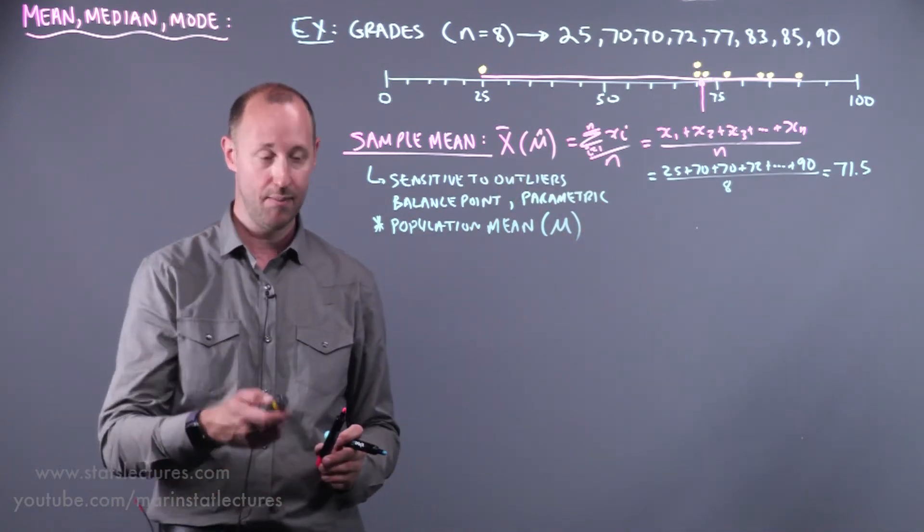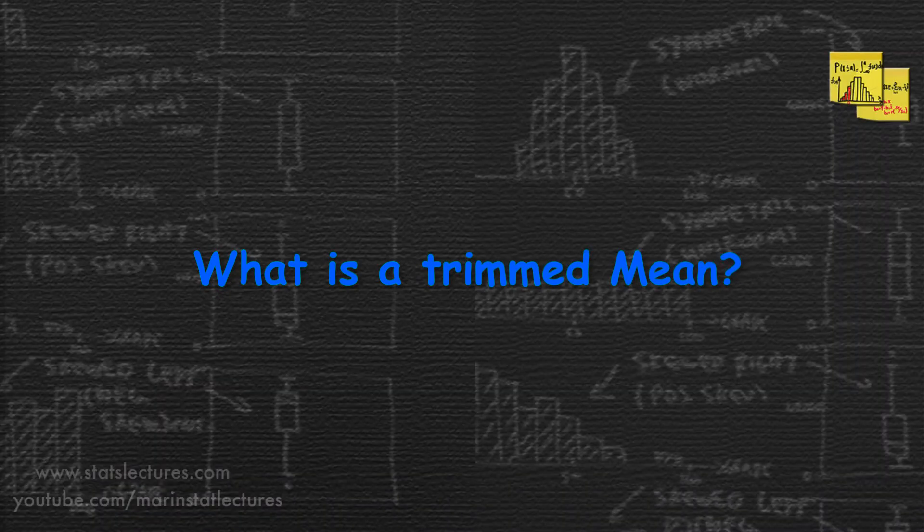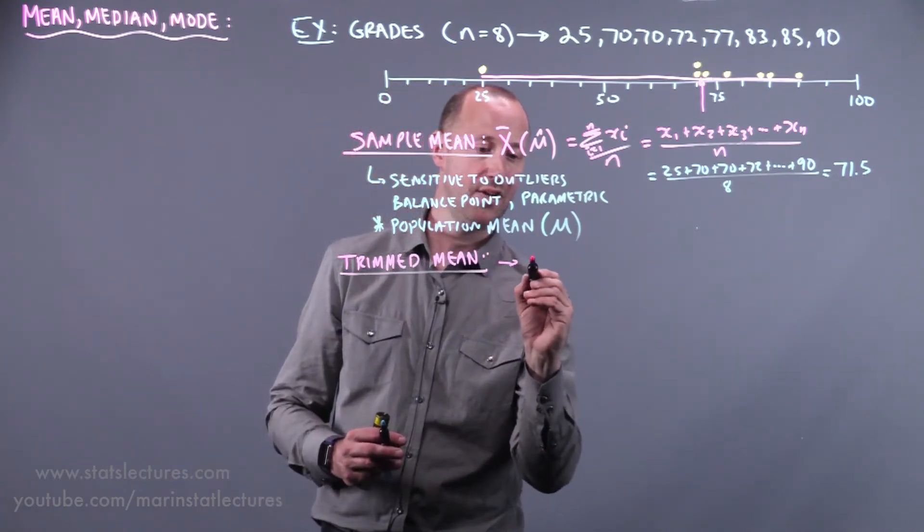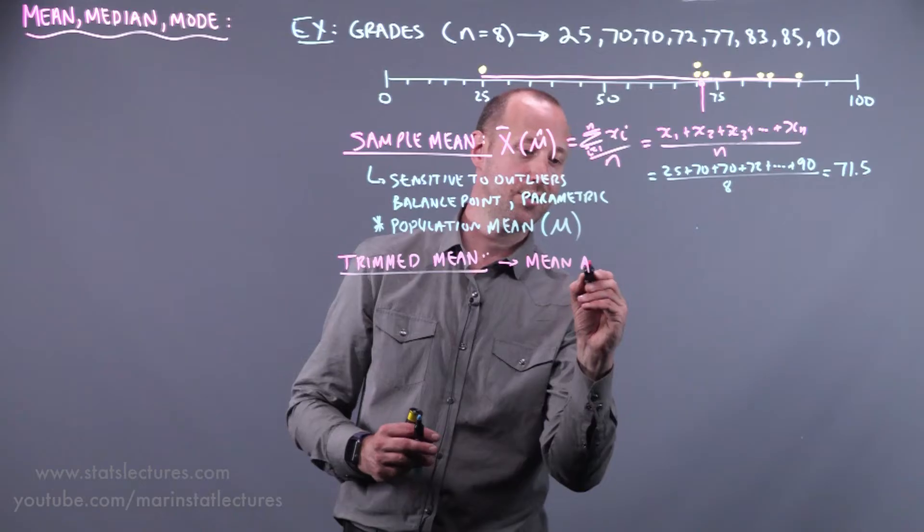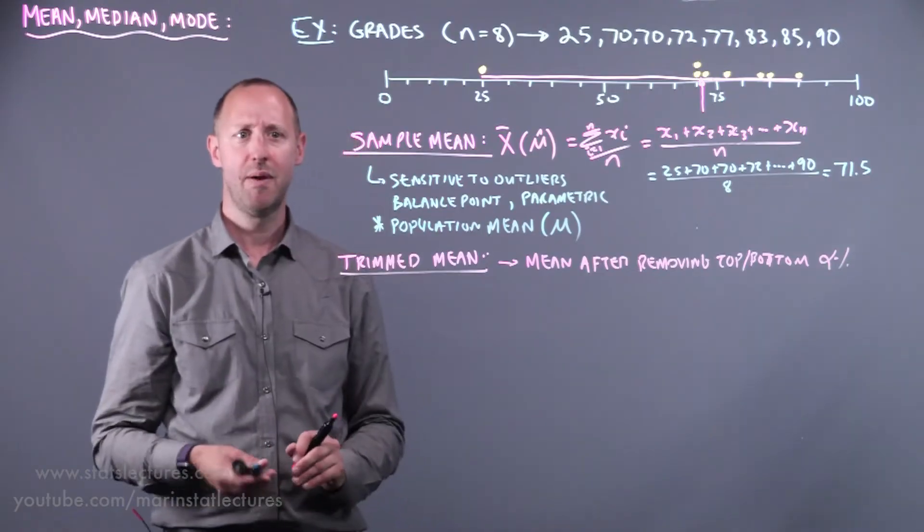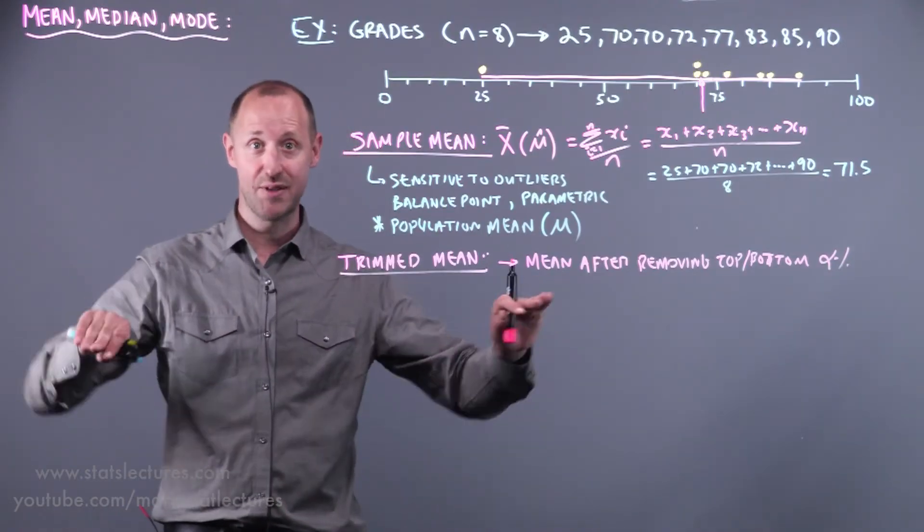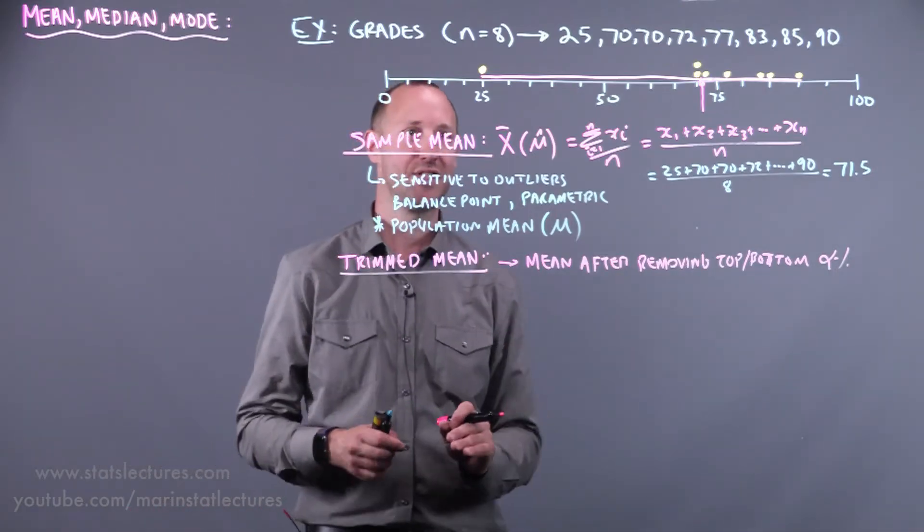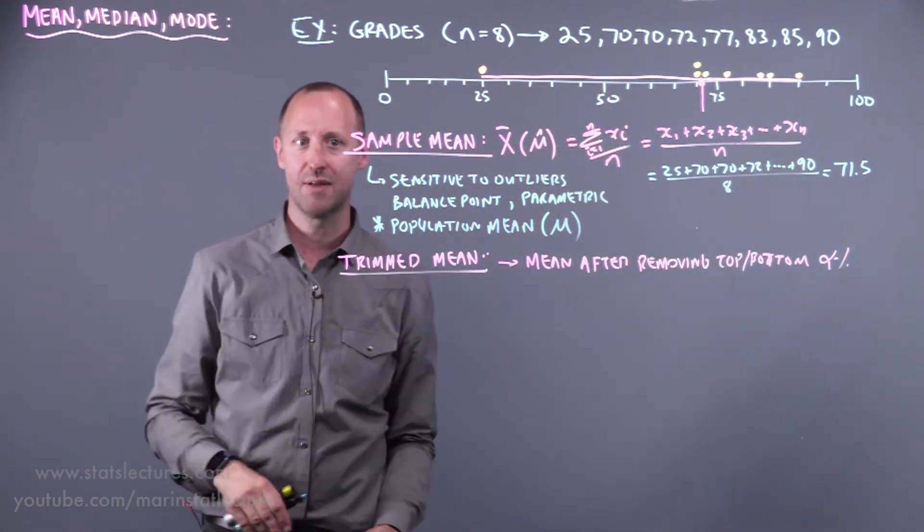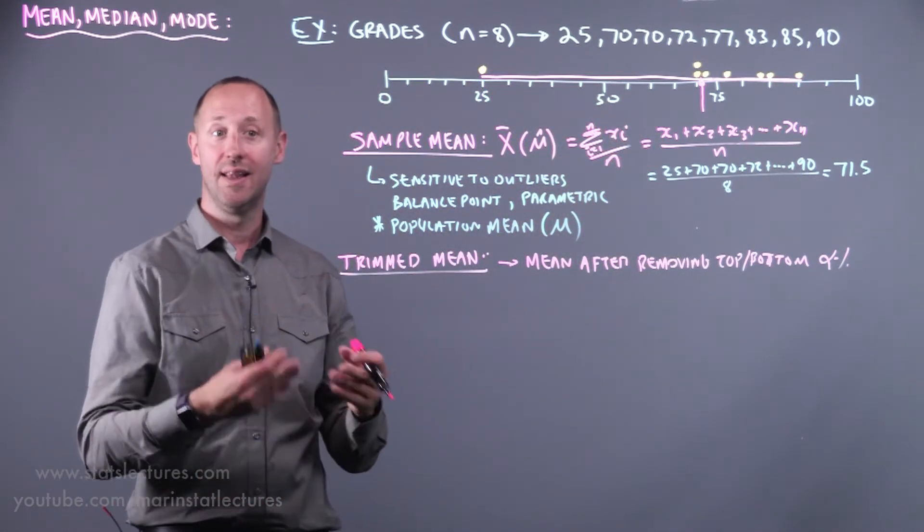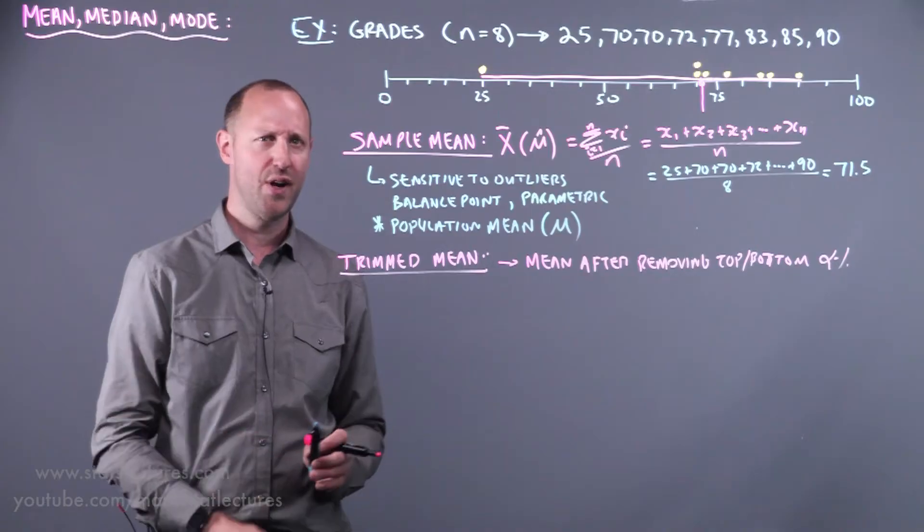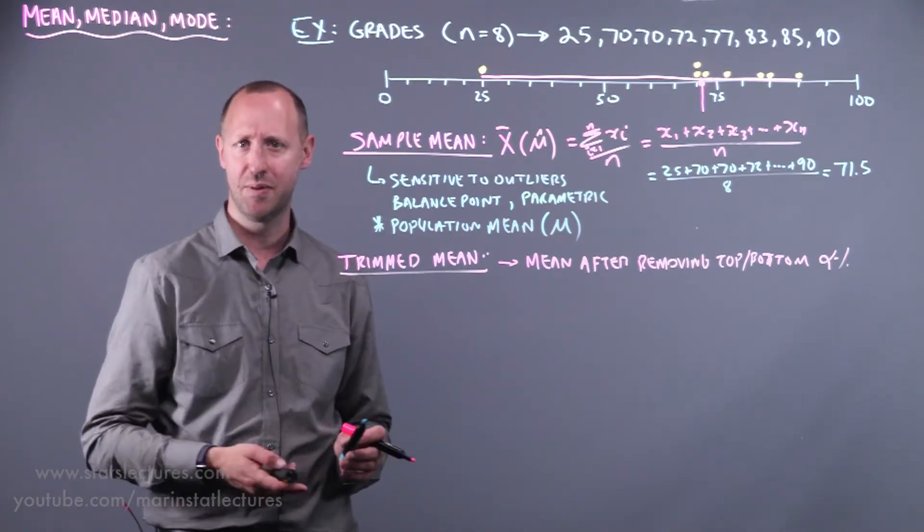Let's give a very quick mention to the idea of a trimmed mean. Essentially what this is, is calculating the mean, the sample mean, after removing the top and the bottom alpha percent of data. So maybe cutting off the lowest 5% of values, the highest 5% of values, and then calculating the mean. In this example, maybe removing the lowest and the highest, and then calculating the mean of those. So just trimming off some of the extremes. This is a way of trying to make the mean less sensitive to outliers or extreme values. It's often not used very much in statistical applications, but it has its place in the world as a summary measure.